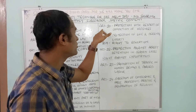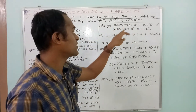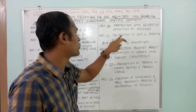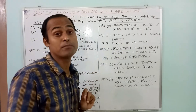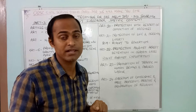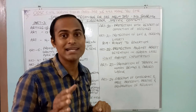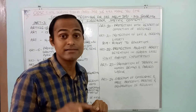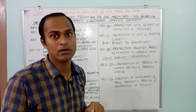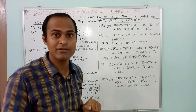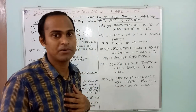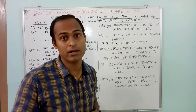Article 20 deals with protection in respect of conviction of offenses. Article 21 — protection of life and personal liberty — is very very important. It is the fundamental of all fundamental rights. Many Supreme Court judgments have categorically cited that Article 21 is the foundation of all fundamental rights. Even during an emergency, the right to life and personal liberty exists.